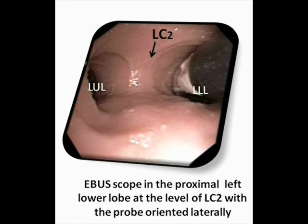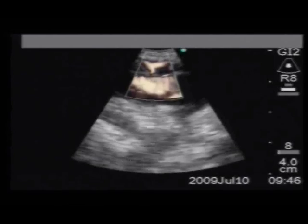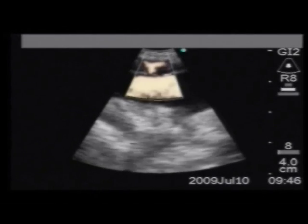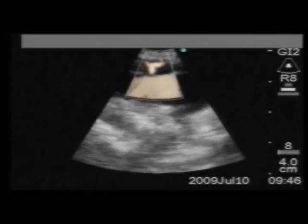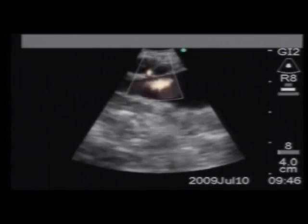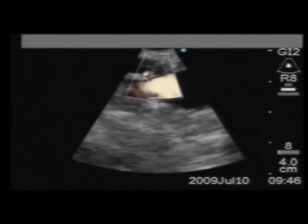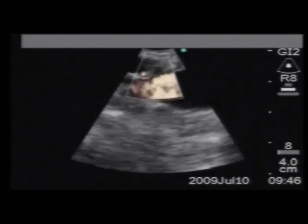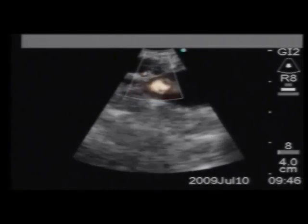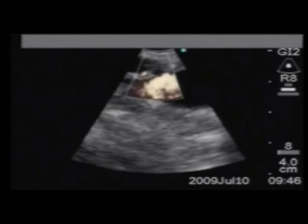Investigation on the left also begins in the lower lobe bronchus. With the transducer facing the lateral wall, the left lower lobe pulmonary artery is seen. This video shows a small 11L lymph node and the left lower lobe pulmonary artery using Doppler mode.